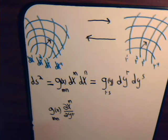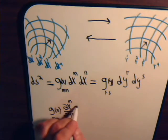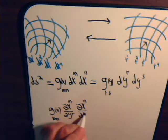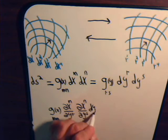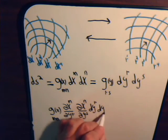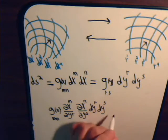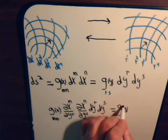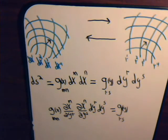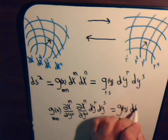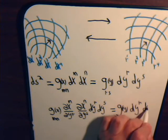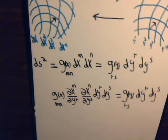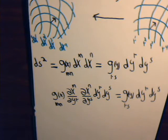Then this is the partial of x^n with respect to y^s, and we have dy^r dy^s. And this is equal to this: g_y rs dy^r dy^s.